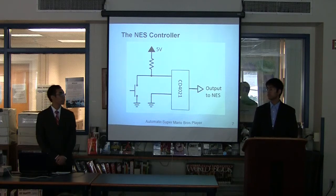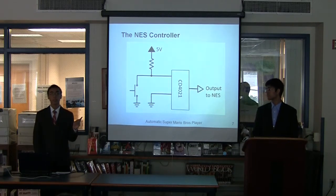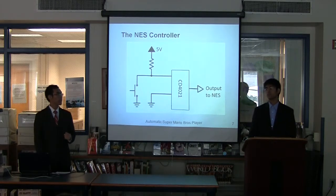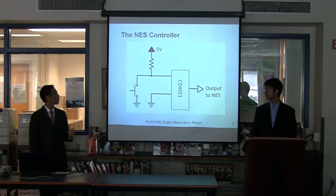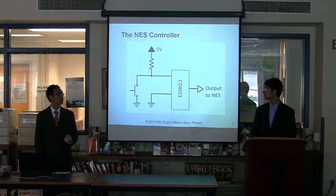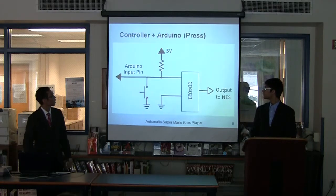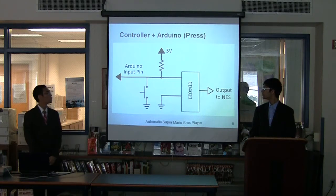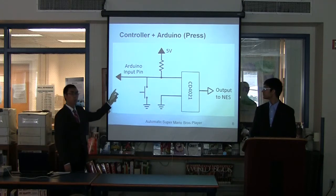Each button pin on the shift register is normally pulled high. When the controller receives a 5-volt signal from the NES console, if a button is not being pressed, the signal goes to the corresponding button pin on the shift register, and the data is outputted to the NES, telling it that the button is being released. When the button is pressed, the signal is instead grounded, and the pin on the shift register is pulled low. As a result, when the data is sent to the NES, it sends the data as a button being pressed.